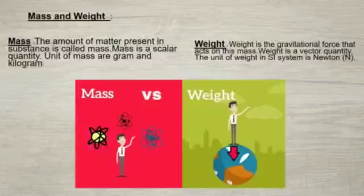Weight is the force exerted on a body by gravity. What we measure in gram or kilogram is mass and not weight. The gravitational force that acts on this mass is called weight. The gravitational force by which the earth attracts an object towards its center is called the weight of the object. Therefore, weight is a vector quantity. It is different at different places on the earth.